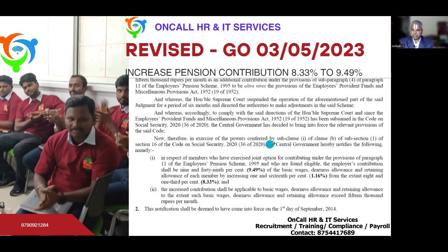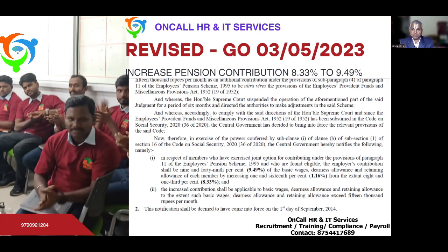Therefore, exercising powers under the Code on Social Security 2020 (36 of 2020), the central government hereby notifies the following: Class 1 — in respect of members who have exercised the joint option for contribution under the provisions of Para 11 of the Employees' Pension Scheme 1995. That means whoever has opted for higher pension under Para 11 — this increase is applicable only to those people.